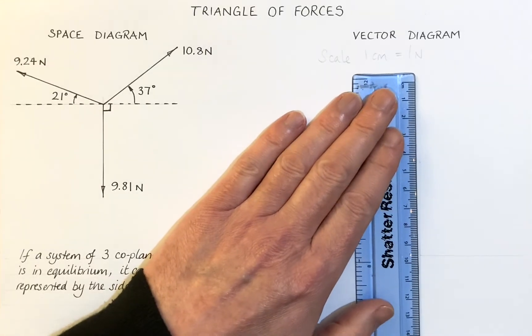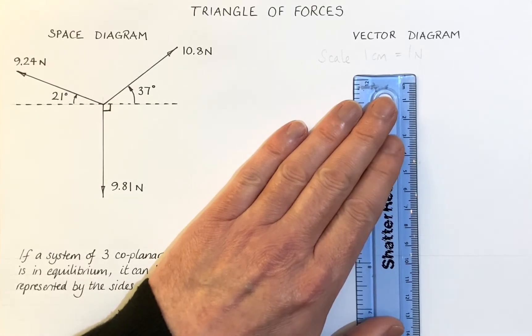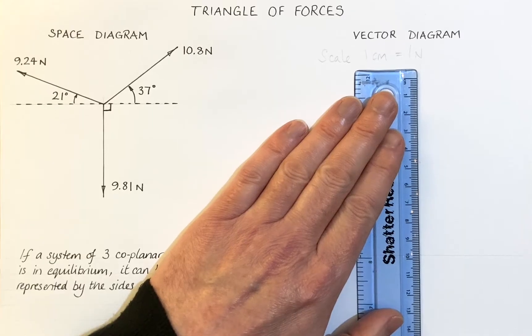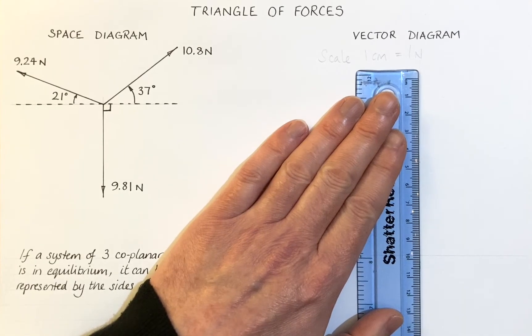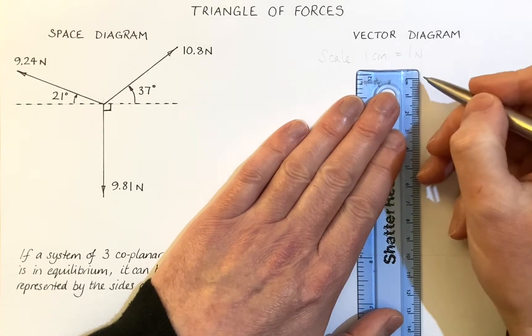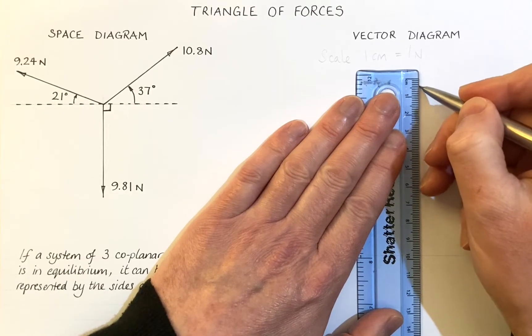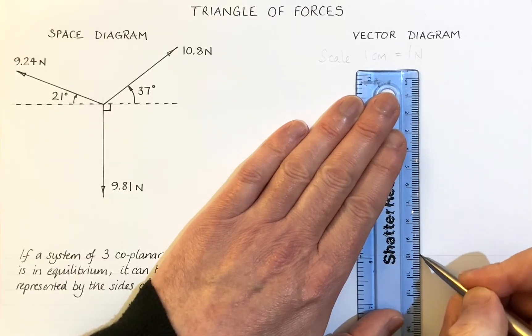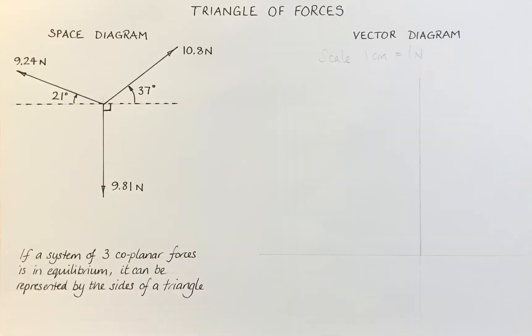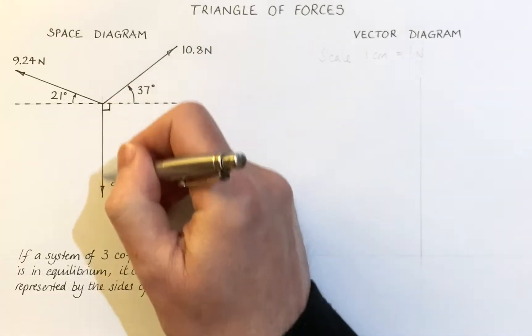Right, let's have a go here. 9.81, so we've got 9 centimeters, 9.8 centimeters. There we go, that should take us to there. And there's our first vector. And it's acting straight down.